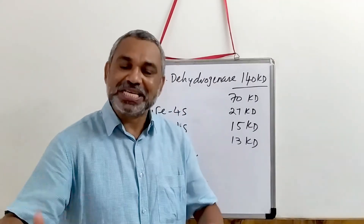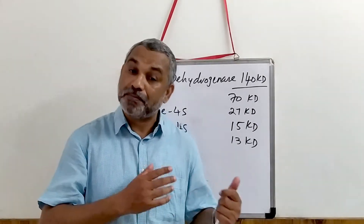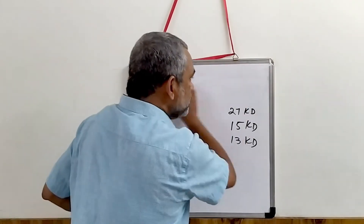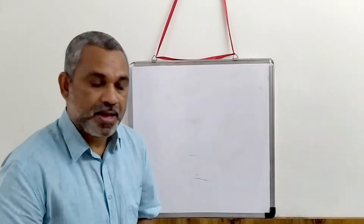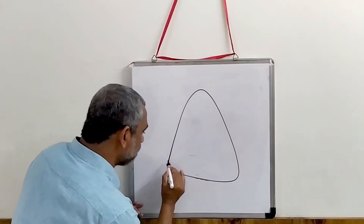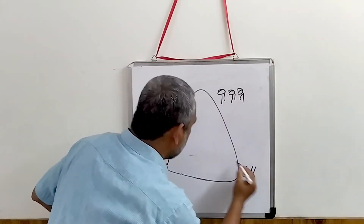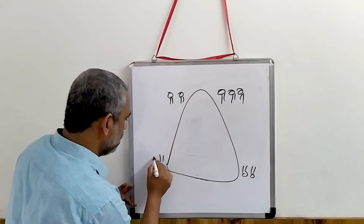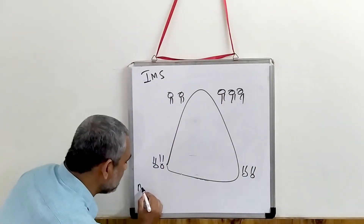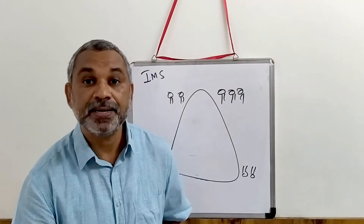Now let us see how exactly electrons are transported in Complex II. This protein is a membrane-bound protein, so this is the protein within the membrane. The upper side is the inner membrane space and the lower side is the matrix side — this is very important for us to know.